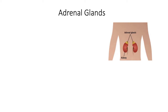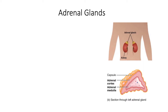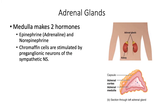The outer part of the adrenal gland is called the cortex. The inner part is called the medulla. We have already learned that the adrenal medulla responds to autonomic nervous system stimulation and makes two hormones, epinephrine and norepinephrine. These are released into the bloodstream and help amplify the sympathetic nervous response.